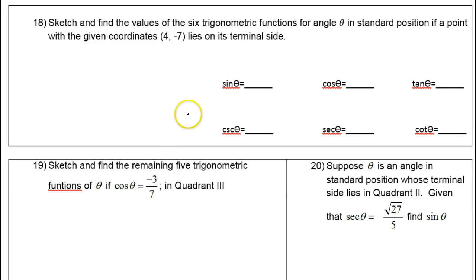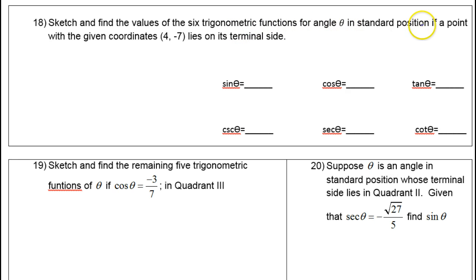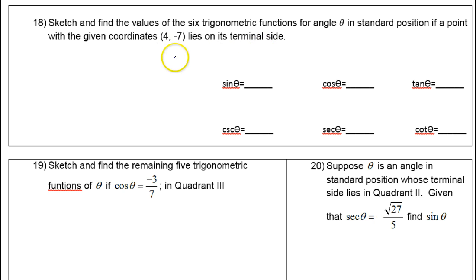For number 18, we are to sketch and find the values of the six trigonometric functions for angle theta, given that the point (4, -7) lies on the terminal side. Let's draw that sketch.